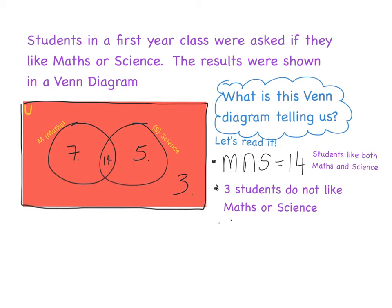The third thing I can look at is just my maths circle. Within my maths circle, I can see there are seven students just in the M part, so there are seven students who like maths only. If I look solely at my science circle, I can see it has 14 and five inside it. The 14 represents students who like maths and science, and the five represents students who like science only.